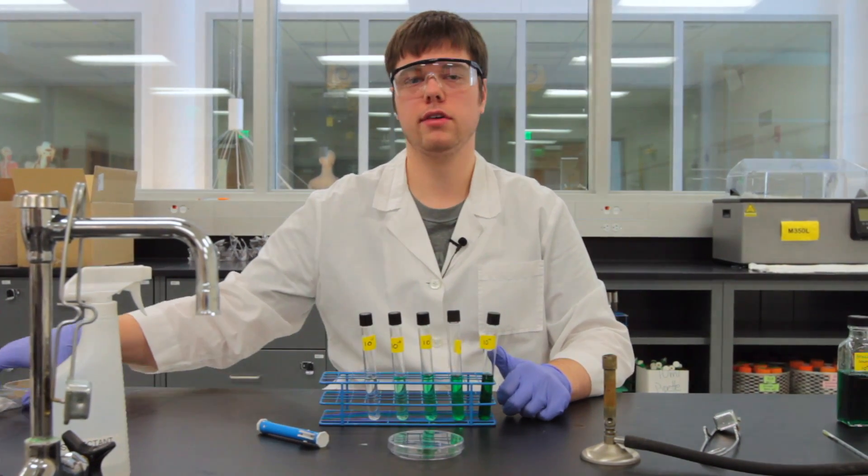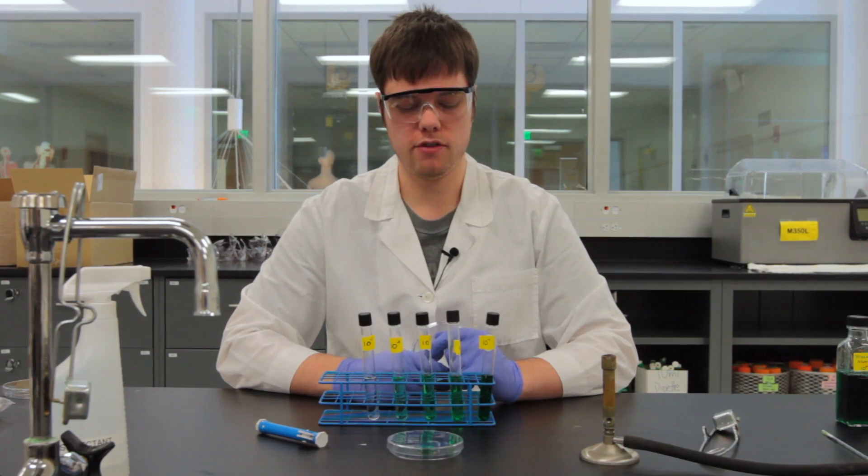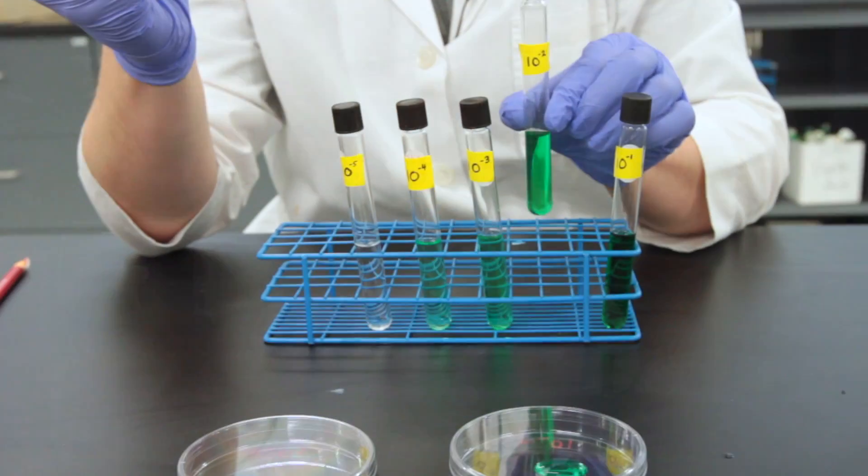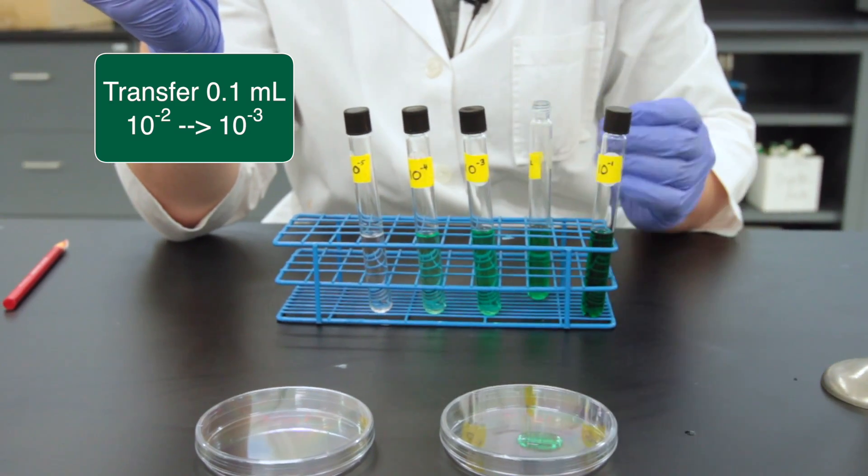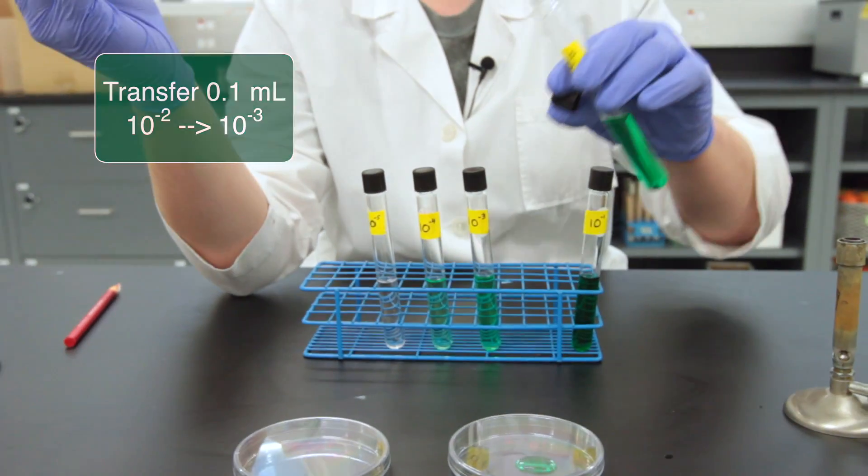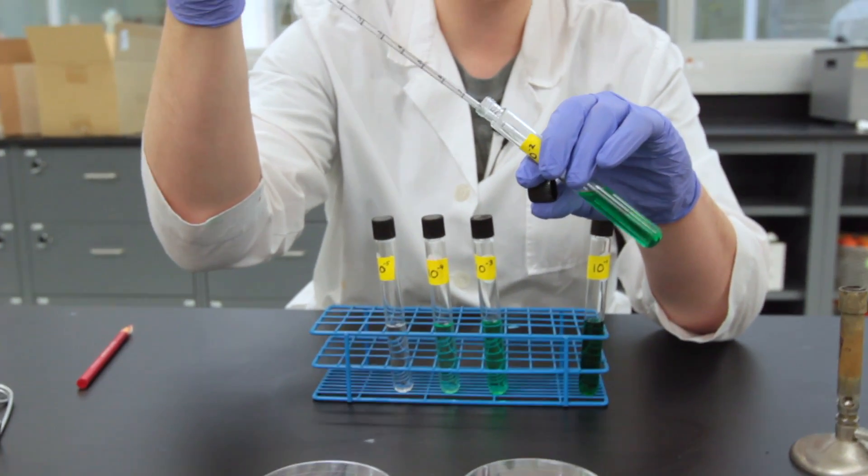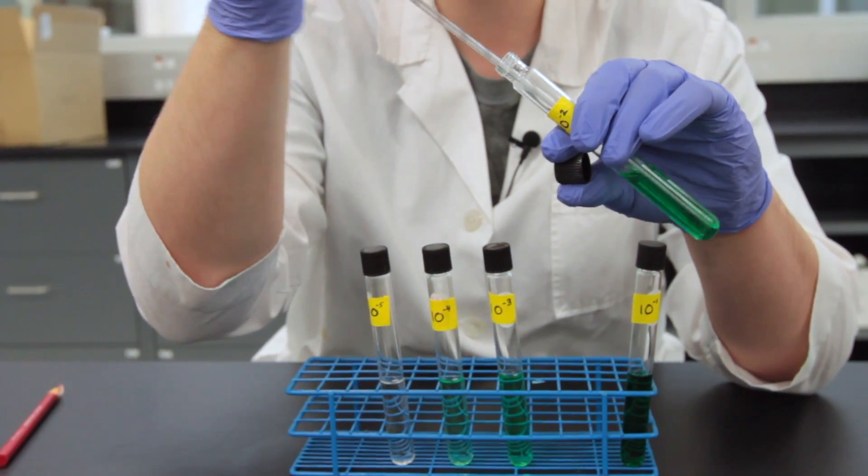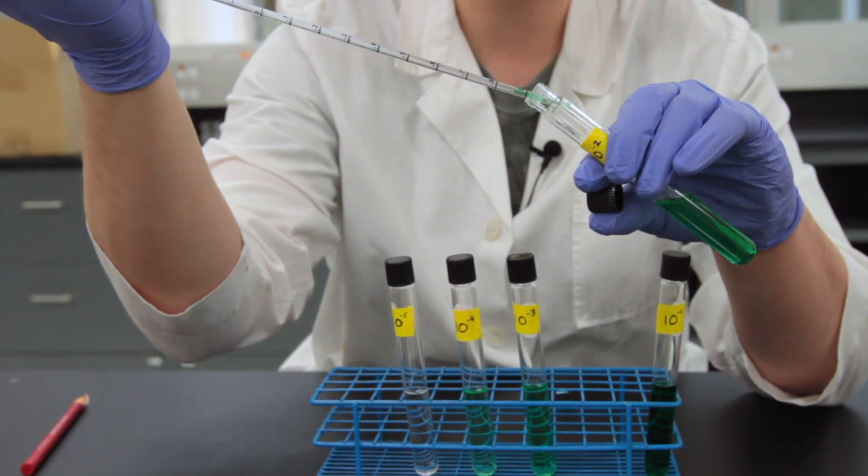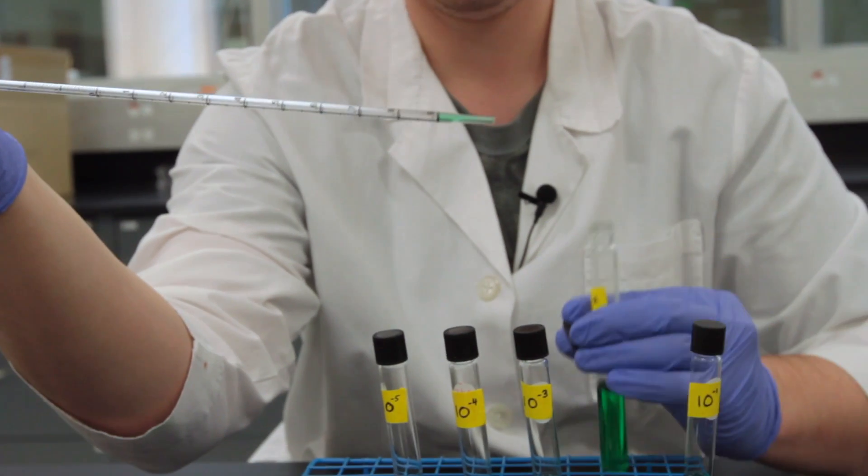Now my protocol says that I need to dispense 0.1 mil of my 10 to the negative 2 solution into my next plate, and that plate is going to be labeled 10 to the negative 3. Very carefully opening up that 10 to the negative 2 blank and drawing up only 0.1 mil. Not one mil but 0.1. Notice the difference.